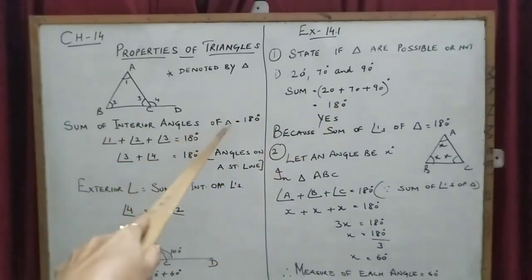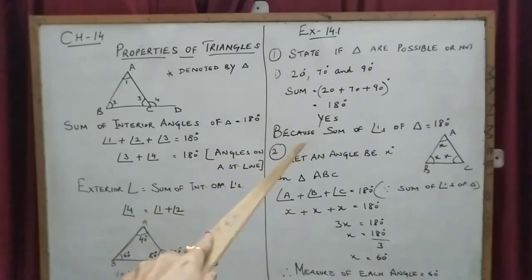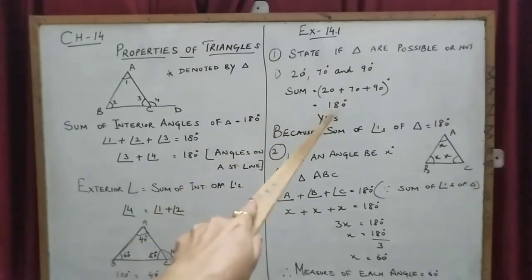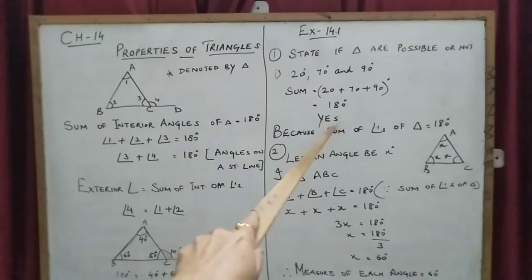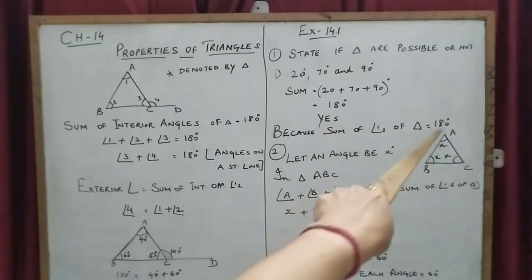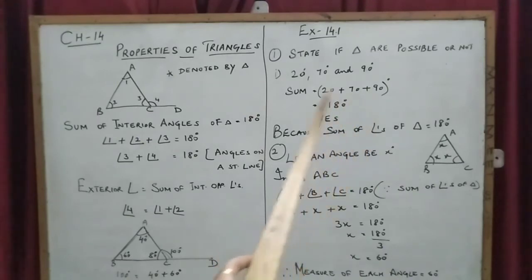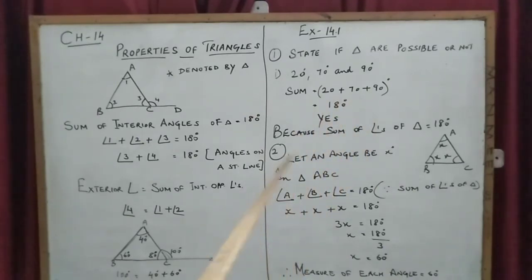The sum of interior angles must equal 180 degrees — it is always 180 degrees. If the sum is 180, the answer is yes. If it is less than or more than 180, the answer is no. Now see the next question, where three equal angles are given.